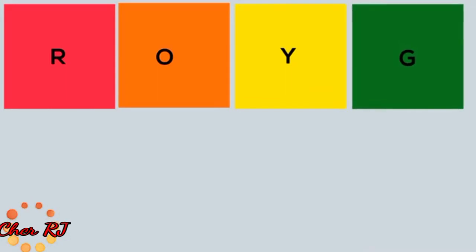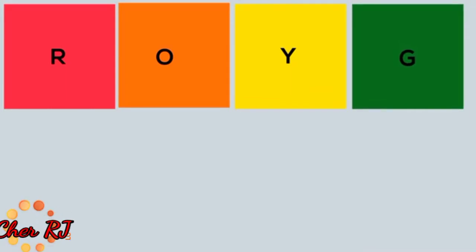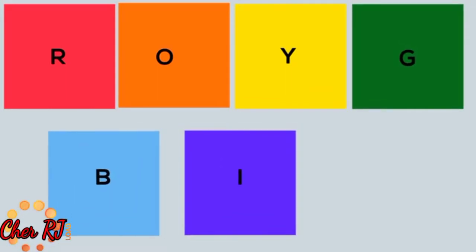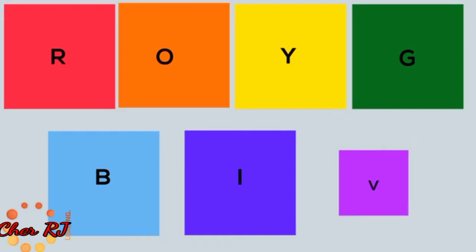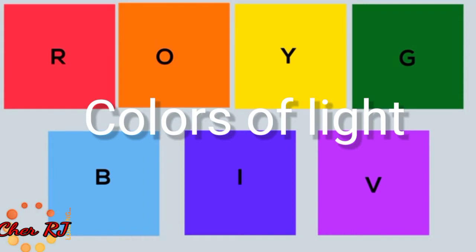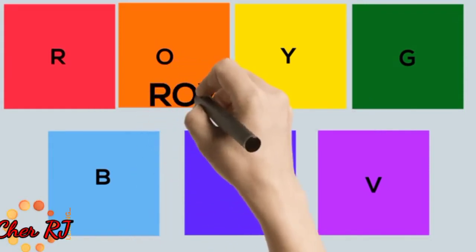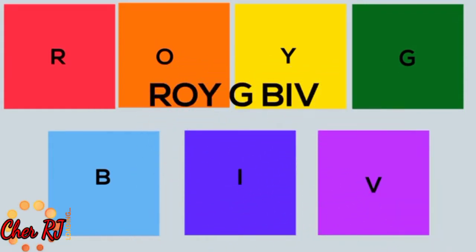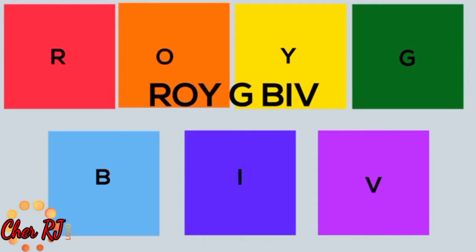Red, orange, yellow, green produce different colors of light. We have blue, indigo, violet. These are the colors of light. This is very common — we have a clue from the word ROYGBIV. These are the colors of light that we can see using our naked eyes.